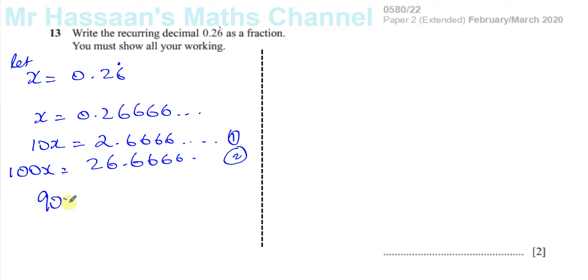Which equals, and this will be 26.6666 minus 2.6666. All these things after the decimal point are going to cancel out. You're left with 26 minus 2, which is 24.